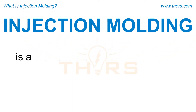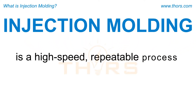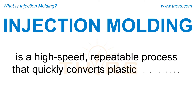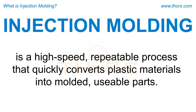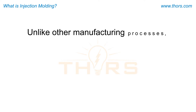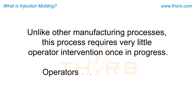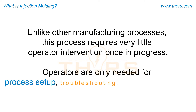Injection molding is a high-speed, repeatable process that quickly converts plastic materials into molded, usable parts. Unlike other manufacturing processes, this process requires very little operator intervention once in progress. Operators are only needed for process setup, troubleshooting, and part collection.